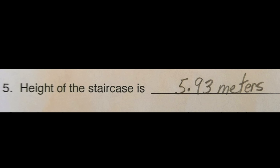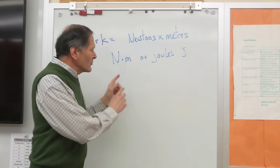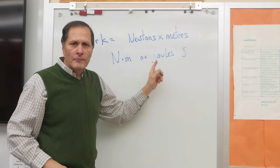Our calculated height was 5.93 meters. So my students take their weight, multiply it by the height of the staircase, and that's going to give them the amount of work done either as newton meters or as a unit of joules.